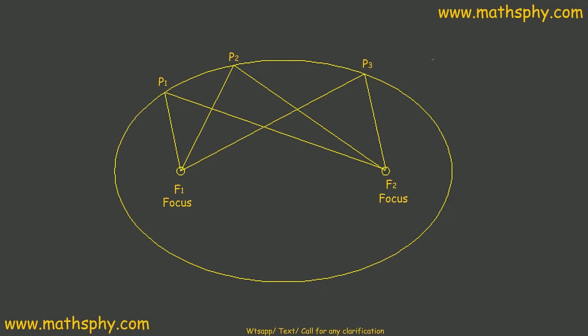Same as in parabola, in an ellipse you take some random points. I have taken three points: P1, P2, P3. You are free to take as many points as you want; for calculation purposes I have taken three, which would be enough to make you understand. Now connect those points to both the foci — P1, P2, P3 each connected to F1 and F2.